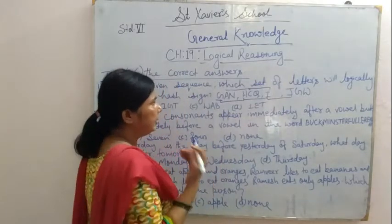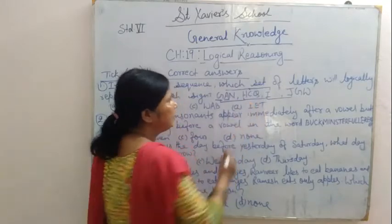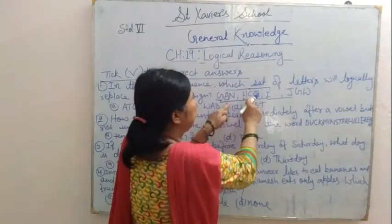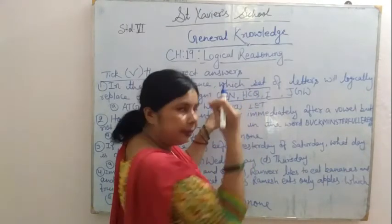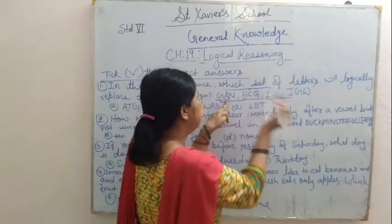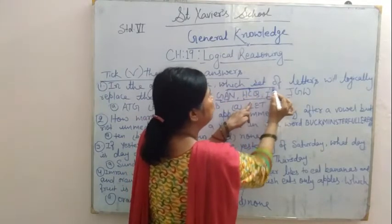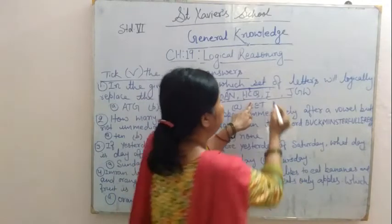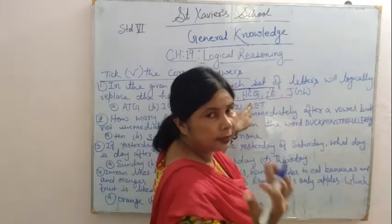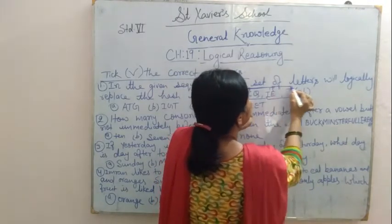Now see the second letter. Two letters after A is C — just leave one letter after A and write the second. So A first, leave B, then comes C. After C, leave one letter D, so the next will be E. And after E, leave F, so the next is G.